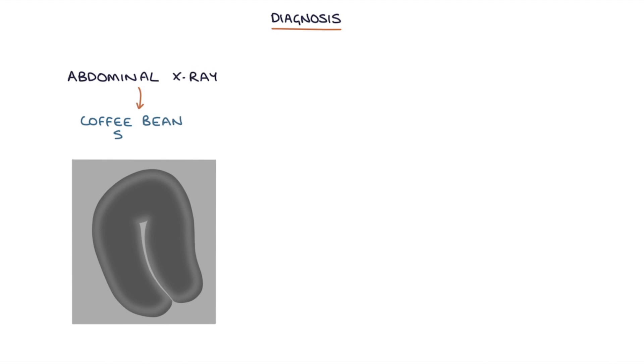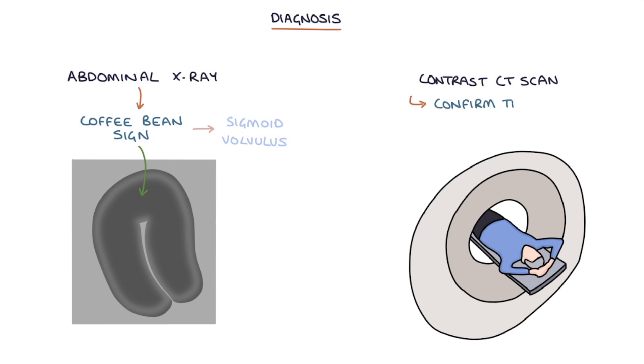So how is a volvulus diagnosed? Abdominal x-ray can show the coffee bean sign in sigmoid volvulus where the dilation and twisted sigmoid colon looks like a giant coffee bean. A contrast CT scan is the investigation of choice to confirm the diagnosis and identify other pathology.